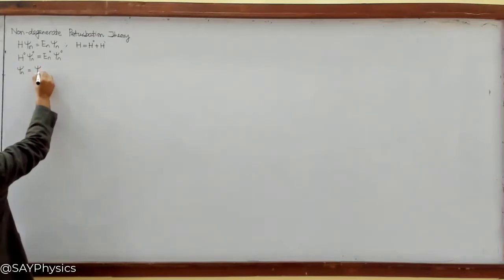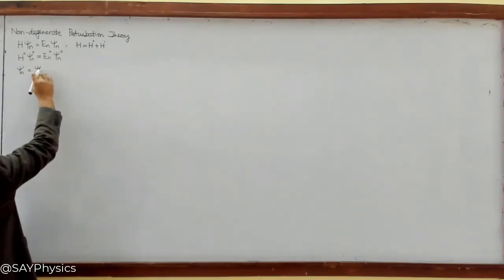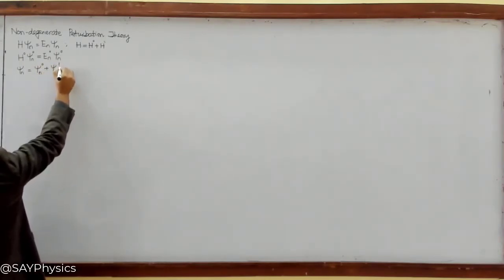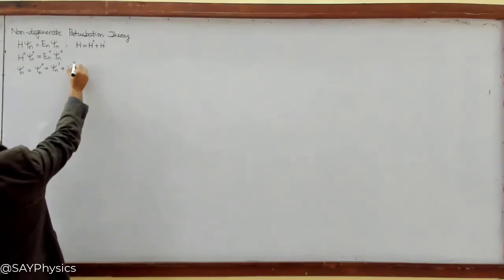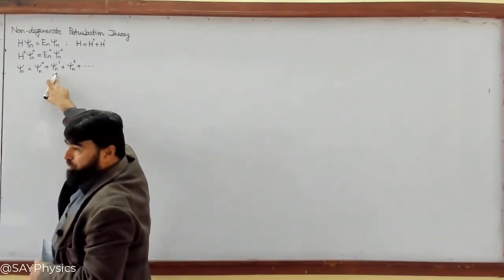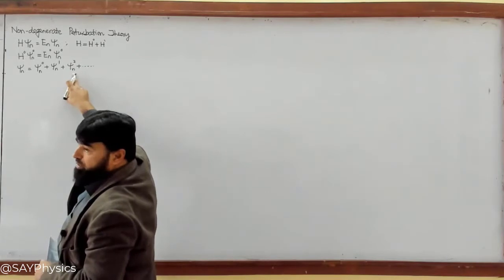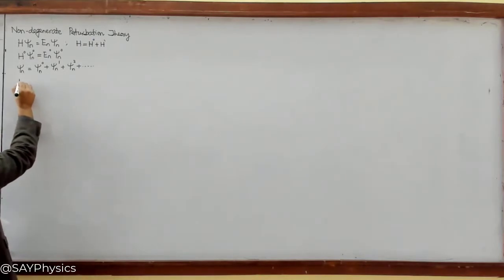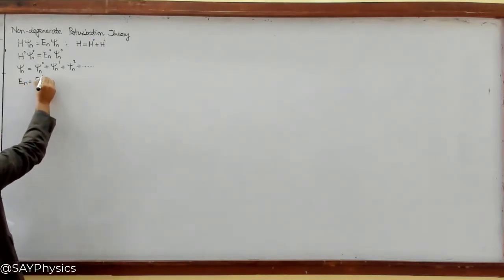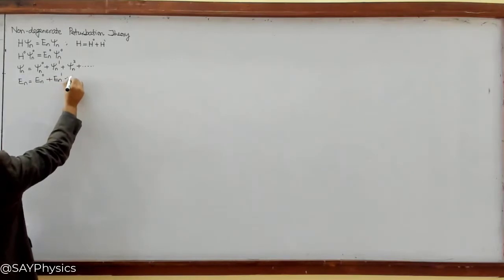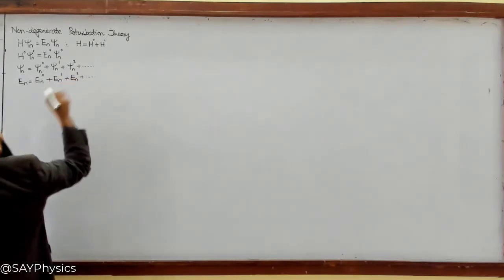The wave function psi_n is the unperturbed wave function psi_n^0 plus psi_n^1 the first-order perturbation, plus psi_n^2 the second-order perturbation, and so on. Similarly for the energy, E_n equals the unperturbed energy E_n^0 plus E_n^1 the first-order correction, plus E_n^2 the second-order correction, and so on.